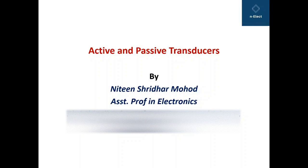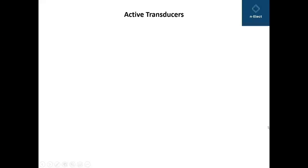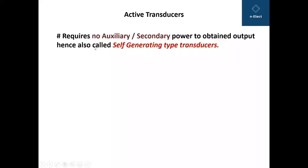Hello everyone, this is Nitin Mahod and we are going to see active and passive transducers today. First of all, active transducers are transducers which require no auxiliary or secondary power to obtain output, and therefore they are also called self-generating type transducers.